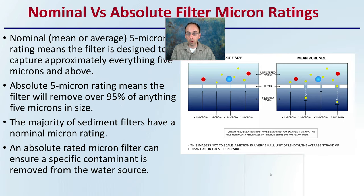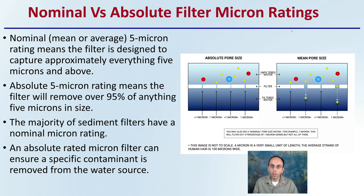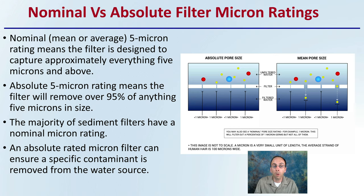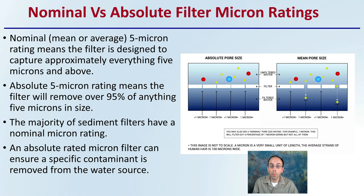Nominal versus absolute filter ratings are often used as interchangeable terms, but they are not. A nominal — or average — 5-micron rating means the filter is designed to capture approximately everything 5 microns and above. An absolute 5-micron rating means the filter will remove over 95% of anything 5 microns in size. Keep in mind that nominal versus absolute will likely have a significant price difference, as an absolute-rated filter ensures a specific contaminant is removed and costs more for that precision.